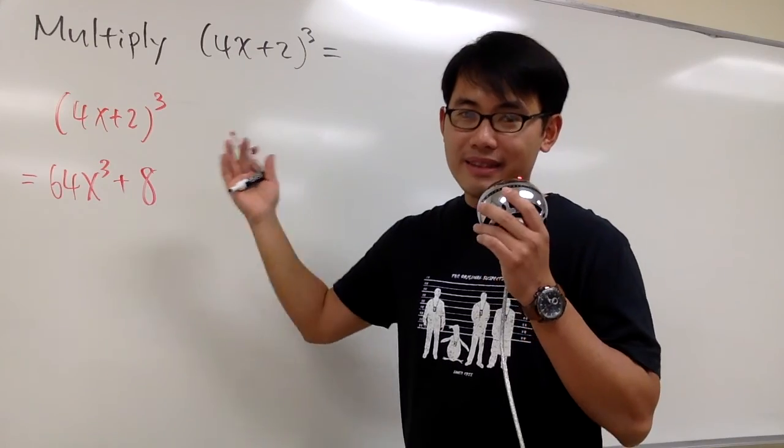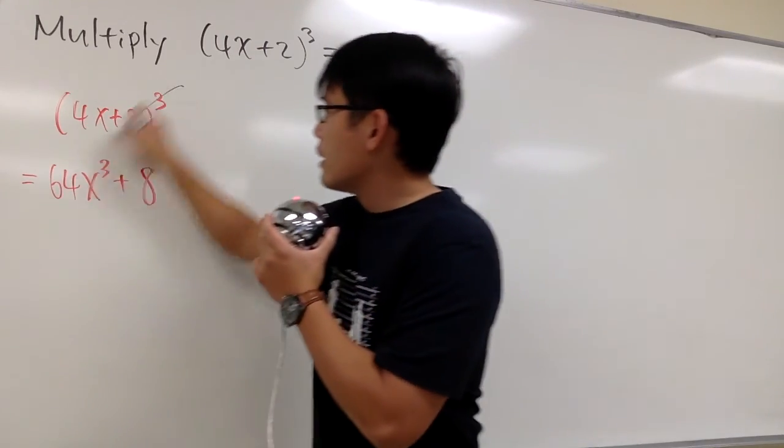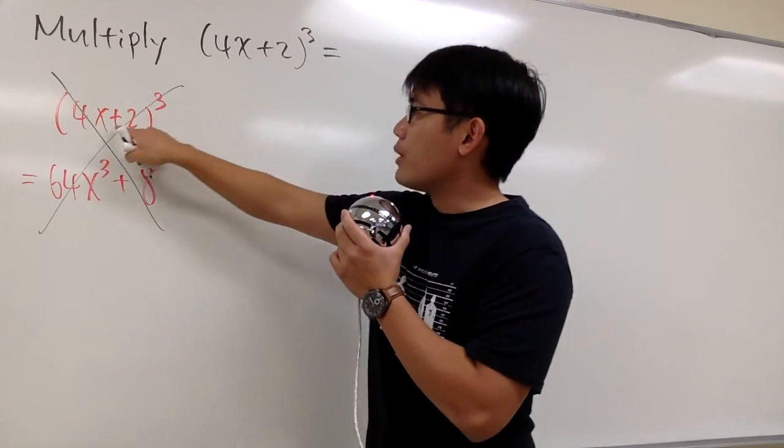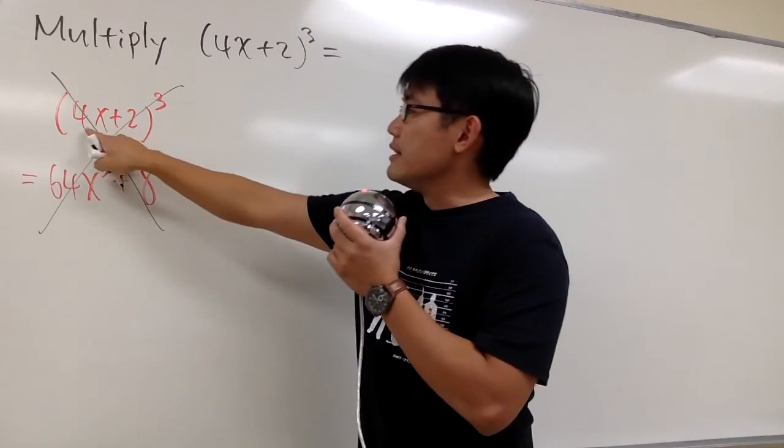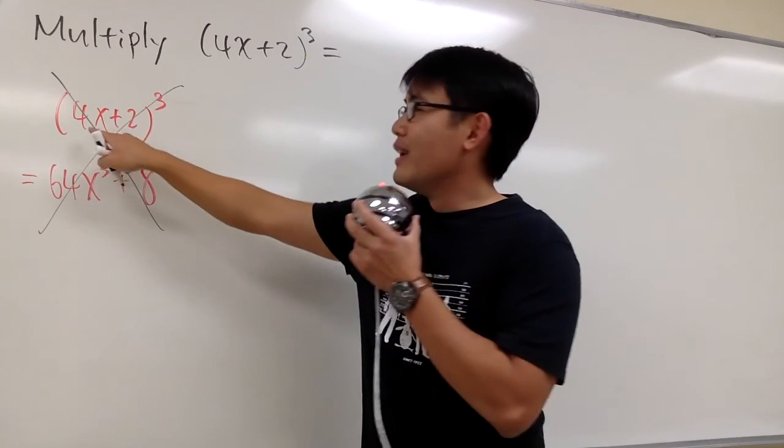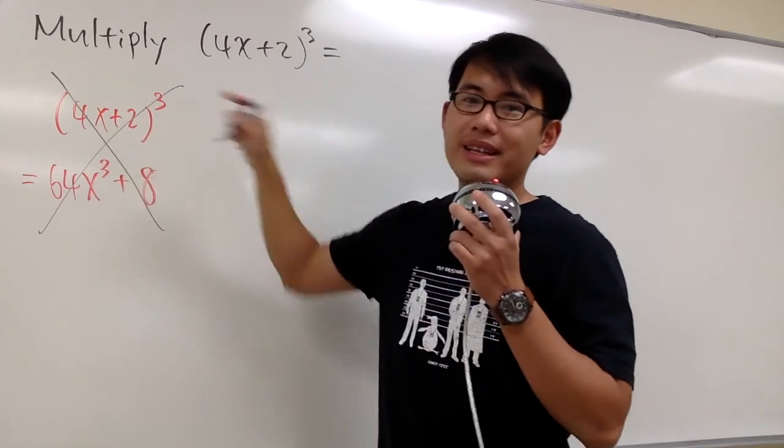People tend to just do that, but this is not correct at all. We don't get to distribute the power into the parentheses, because inside we have a binomial. We have a 4x plus 2, there's addition in the middle.